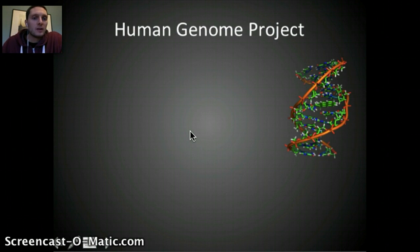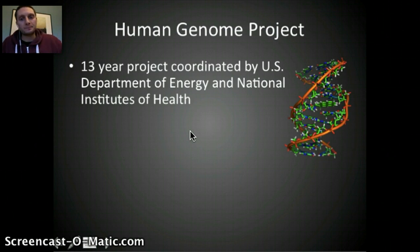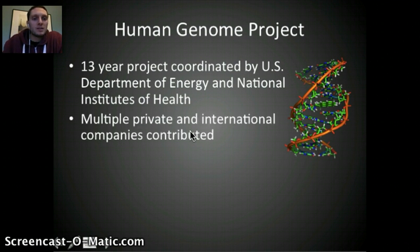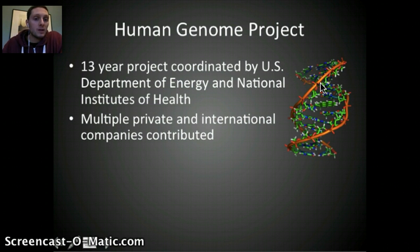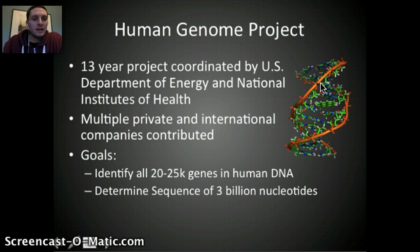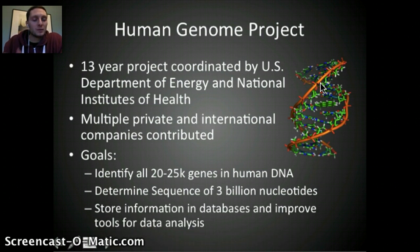The last thing we want to discuss in this video is the Human Genome Project. This was a 13-year project primarily coordinated by the U.S. Department of Energy and the National Institutes of Health, but also a lot of private corporations contributed. What this project was doing was sequencing the entire human genome — outlining all of the adenines, thymines, guanines, and cytosines. Specific goals included identifying all approximately 20,000 to 25,000 genes in human DNA and determining the sequence of about 3 billion nucleotides.